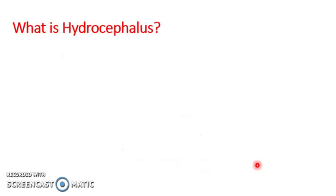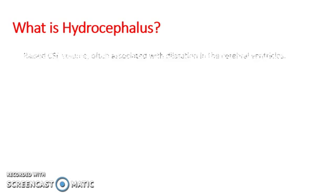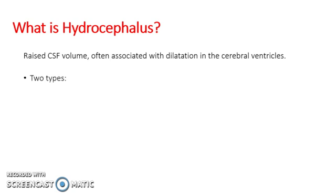Now to start with, what is hydrocephalus? In its simplest terms, hydrocephalus is an accumulation of CSF in the ventricles, causing a dilatation of them as a result. There are two types: communicating and non-communicating.